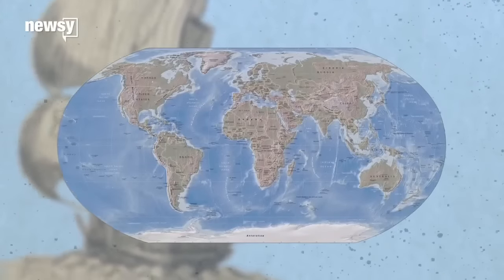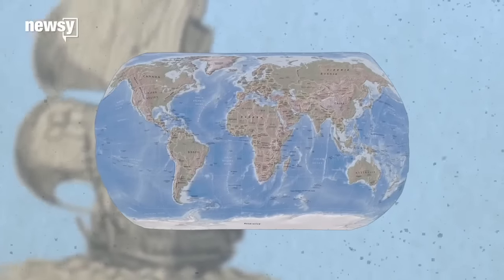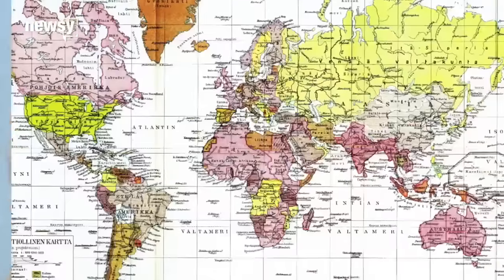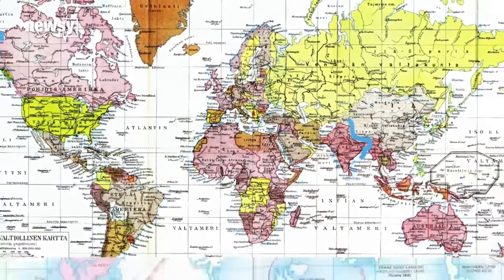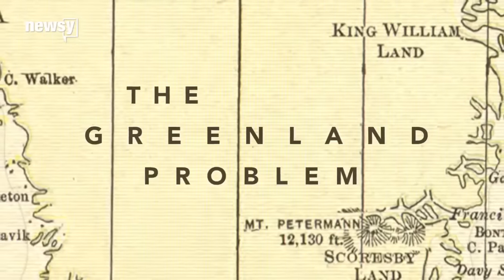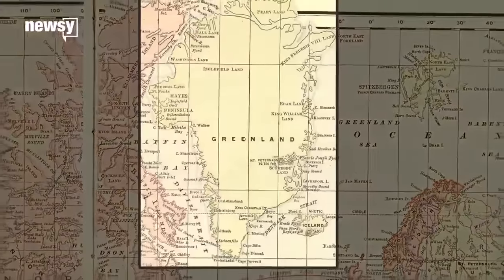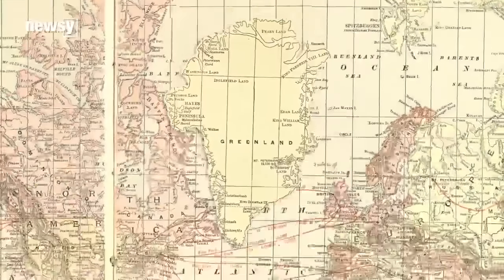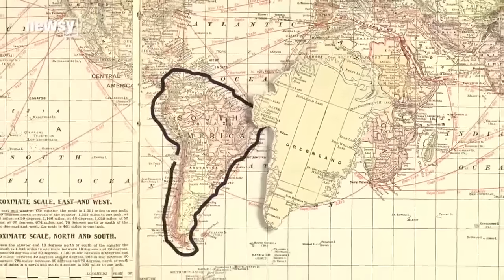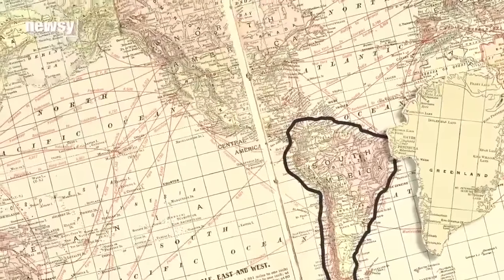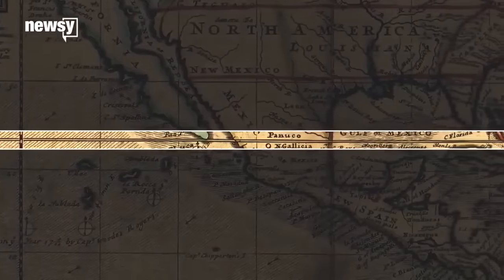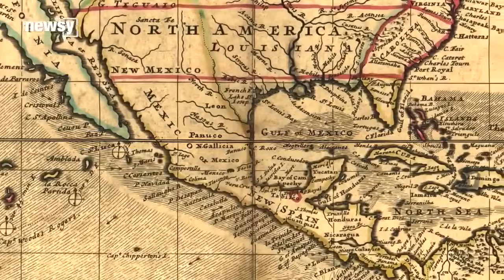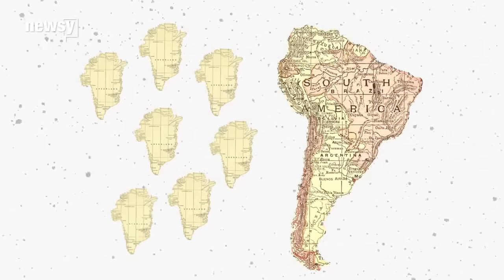But to make a navigation-friendly map, the projection distorts landmasses the closer they are to the poles. That gives us the wrong idea about the relative size and maybe even the importance of some regions. This creates what some map makers call the Greenland problem. On Mercator's map, Greenland is huge — bigger than the entire continent of South America. The same thing happens with Alaska; the state looks bigger than the entire country of Mexico. In reality, South America is eight times the size of Greenland, and Mexico is actually bigger than Alaska.